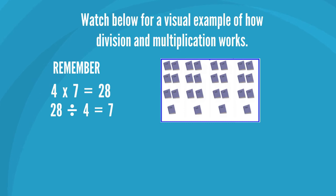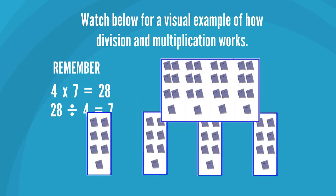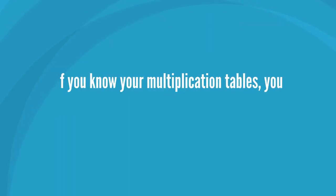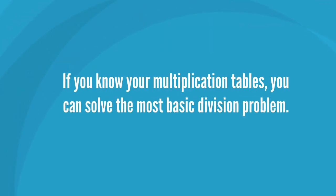Watch below for a visual example of how division and multiplication work. Remember, 4 times 7 equals 28 and 28 divided by 4 equals 7. If you know your multiplication tables, you can solve the most basic division problem.